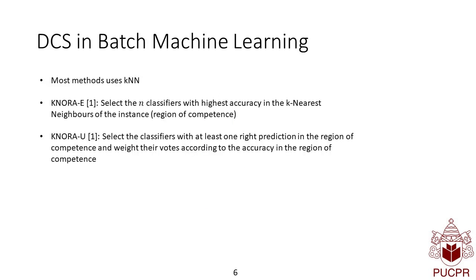DCS in the batch machine learning literature, most of the methods use k-nearest neighbors. I will cite two really famous here, for example, the k-NORA eliminate.